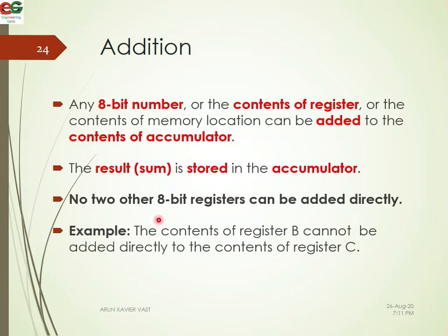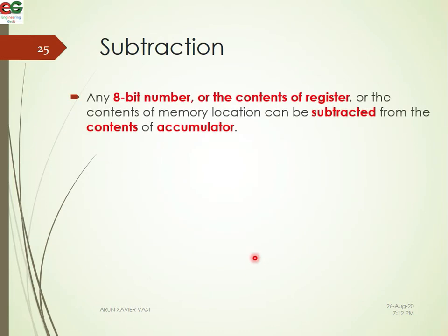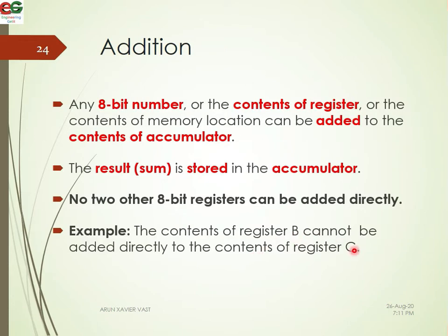Point number 2: 8-bit registers can be added directly. We can add any registers. For example, we can add B and C — that is B plus C. The content of register B can be added to the content of register C, so we can compute A plus B, or B and C.